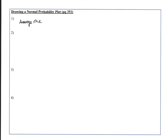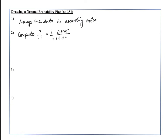When drawing a normal probability plot, the first step is to arrange the data in ascending order. Next, we compute F sub i, which equals i minus 0.375 all over n plus 0.25. This equation is derived at a level beyond this class, but if you continue further in your math journey you'll be able to find out how this formula was derived.